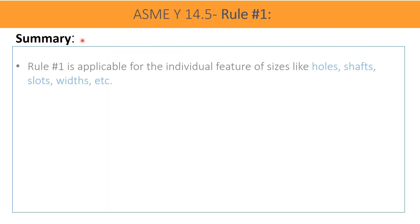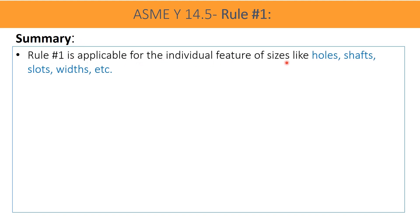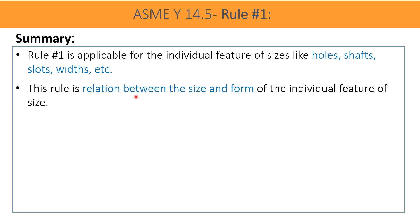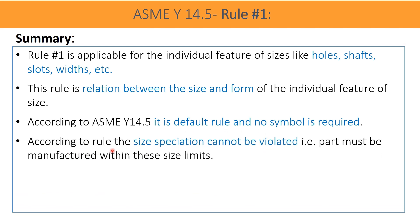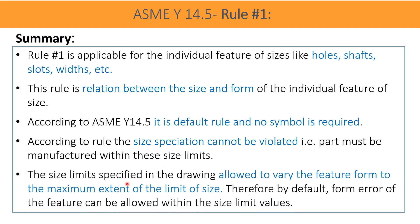Summary of the rule: Rule 1 is applicable for individual features of size such as holes, shafts, slots, widths, etc. This rule defines the relation between the size and the form of an individual feature of size. According to ASME Y14.5, it is a default rule and no symbol is required. According to this rule, the size specification cannot be violated — the part must be manufactured within the size limits only. The size limit specified in the drawing allows the feature form to vary to the maximum extent of the size limits. Therefore, by default, form error of the feature can be allowed within the size limit values.